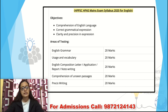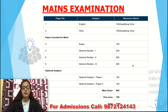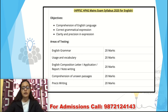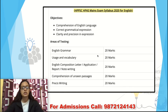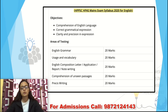Let's see the English syllabus. It includes 20 marks for usage and vocabulary, 20 marks for English composition including letter, application, and note writing, 20 marks for comprehension of unseen passages, and 20 marks for précis writing. This paper checks your language ability and expression.